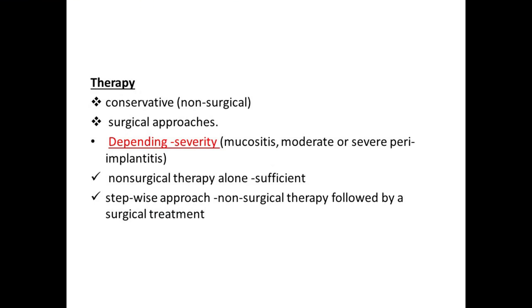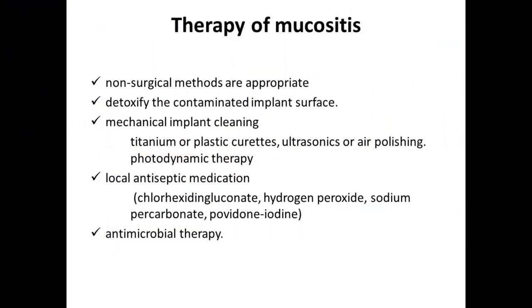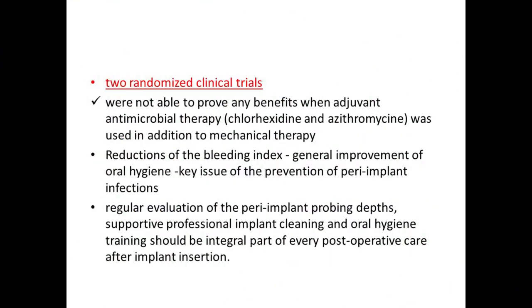Peri-implantitis can be managed conservatively or surgically depending on severity. For mucositis, non-surgical therapy alone is sufficient. A stepwise approach — non-surgical followed by surgical treatment — is appropriate. Therapy of peri-mucositis involves detoxification of the contaminated implant surface with mechanical cleaning using titanium or plastic curettes, ultrasonic, or air polishing, plus photodynamic therapy. Local antiseptics such as chlorhexidine gluconate, hydrogen peroxide, sodium carbonate, or povidone-iodine may be used along with antimicrobial therapy. Clinical trials show no significant difference between adding antimicrobial therapy versus mechanical therapy alone.